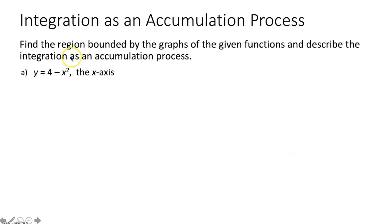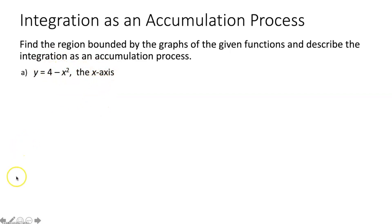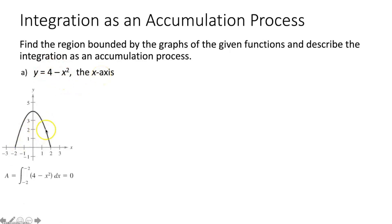Now let's quickly talk about integration as an accumulation process. The problem says: find the region bounded by the graphs of the given functions and describe the integration as an accumulation process. We have the function y = 4 minus x squared, which is a downward facing parabola, and our other function is the x-axis, y = 0. What I want to show you here is that the area between your upper function and your lower function actually builds across your interval — it doesn't all of a sudden become the area between those two curves.